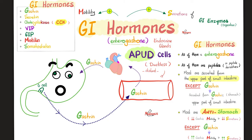Gastrointestinal hormones are collectively known as enterogastrone — 'entero' means intestine, 'gastro' means stomach. The cells that release them are known as APUD cells: amine, precursor, uptake, and decarboxylation. All gastrointestinal hormones hate the stomach, except gastrin. Gastrin is probably the only one that is pro-stomach motility and secretion; all the others are anti-motility and anti-secretion of the stomach, for the most part.